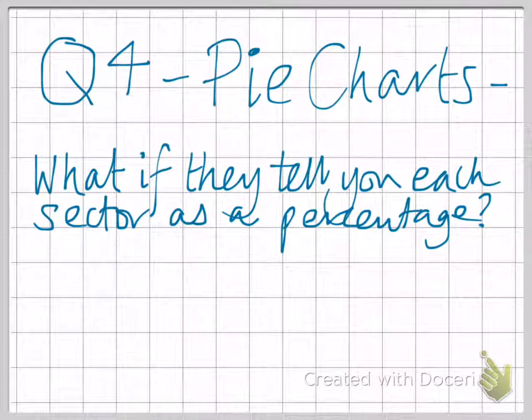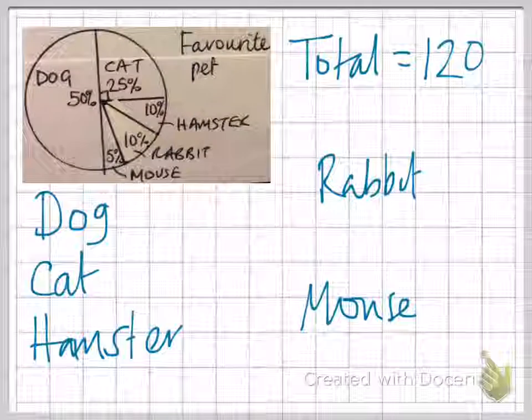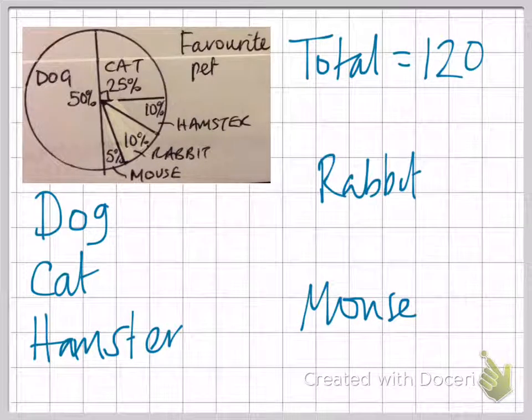Q4 is a helpful video if you're given a pie chart where each of the sectors is given as a percentage rather than a fraction. Here we've got one about favorite pets.